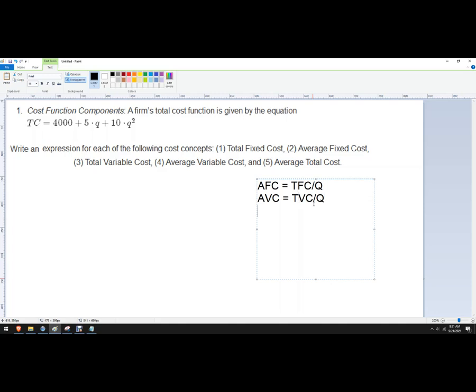And then average total cost, which it is asking here, you can actually get that two ways. So you can either go total cost divided by quantity, or you can go average total cost is average fixed cost plus average variable cost.